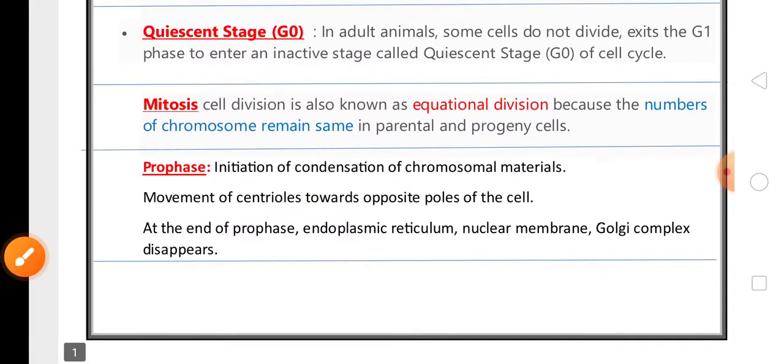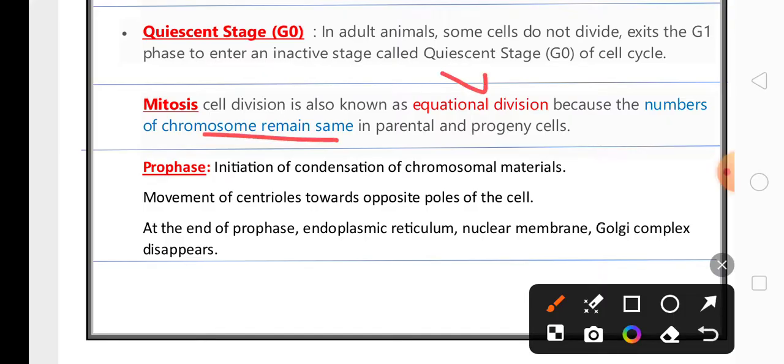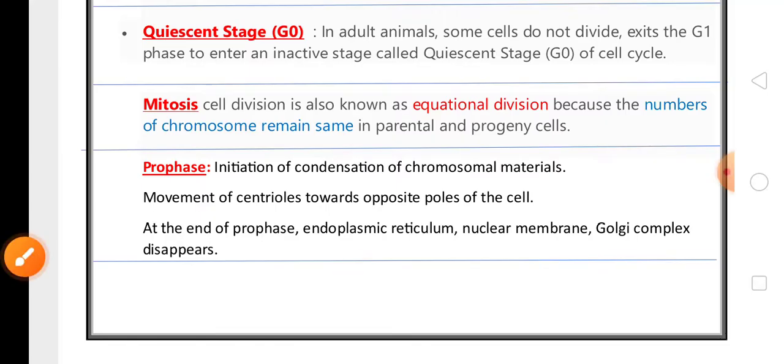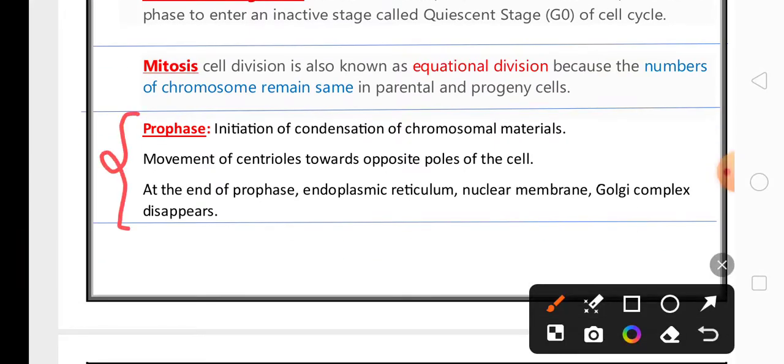Mitosis is an equational division where the number of chromosomes remain the same in the parent cell and in the daughter cells. The first phase of mitosis is prophase.